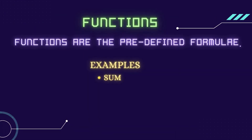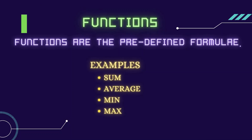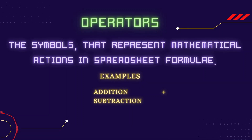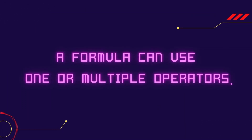Functions are the predefined formulae. Examples of some functions are SUM, AVERAGE, MEAN, and MAX. Operators are symbols that represent mathematical actions in a spreadsheet formula. Examples: addition uses the plus sign, subtraction uses the minus sign, multiplication uses the asterisk sign, and division uses the forward slash. A formula can use one or more operators.